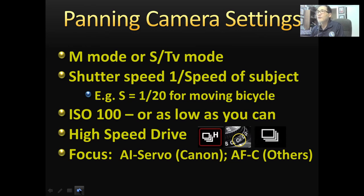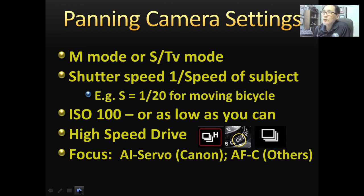Now let's talk about camera settings. I normally shoot in M mode, but the key is you control the shutter speed. If you want, you can use S or TV mode for Canon, or shutter priority mode for other cameras.